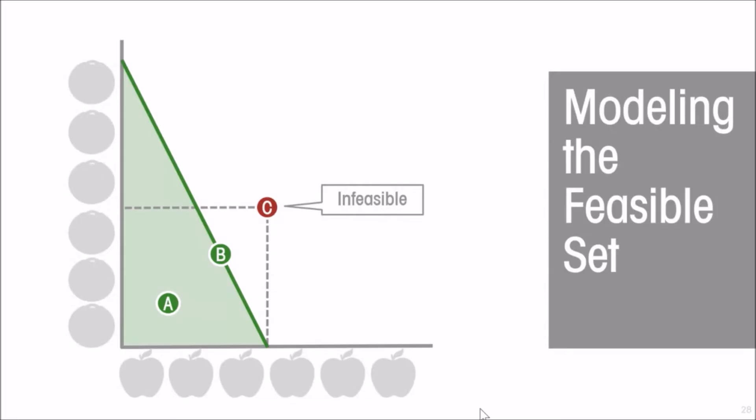And a combination outside the boundary is not possible given current resources. Our productive capacity cannot produce three oranges and three apples at the same time. So what that boundary does is it shows us graphically what is possible and what is not.